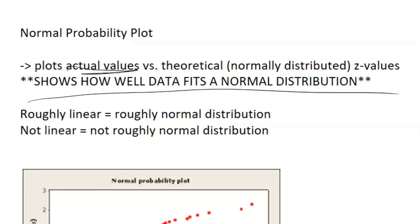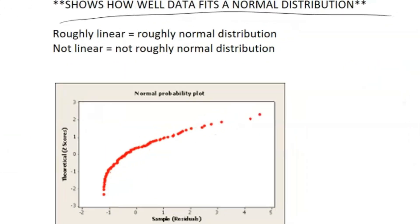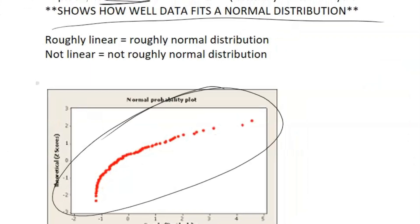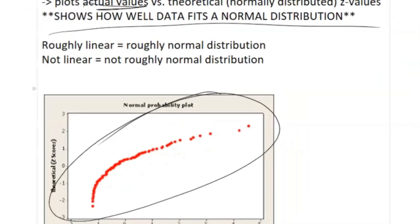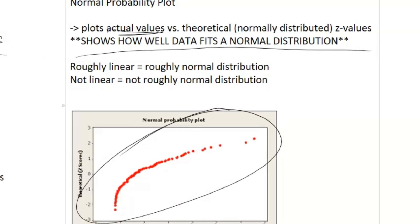So it pretty much just shows you how well the data fits a normal distribution. And that's, you know, something you might see like that. So basically, all you need to know is that if it's roughly linear when you plot this, or it might just give you the graph, it's going to be roughly normal distribution.